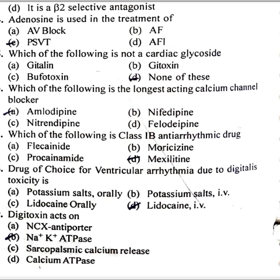Adenosine is used in treatment of PSVT. Which one of the following is not a cardiac glycoside? None of the above — meaning all are cardiac glycosides: Gitalin, G-toxin, and Bufotoxin.